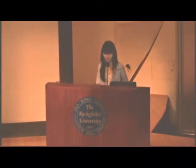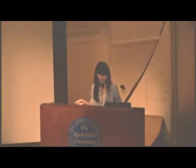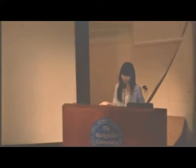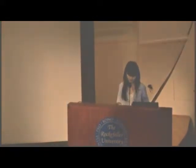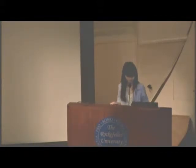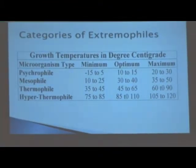Extremophiles live in harsh conditions, and we judge their habitats based on what we would consider extreme for human existence. The suffix -phile means lovers of, and extreme means extreme — so they are lovers of extreme, and they survive well in harsh conditions that we would not be able to survive in. The four categories of extremophiles I work with are psychrophiles, mesophiles, thermophiles, and hyperthermophiles. The numbers are in Celsius and represent the temperatures they live and survive well within.